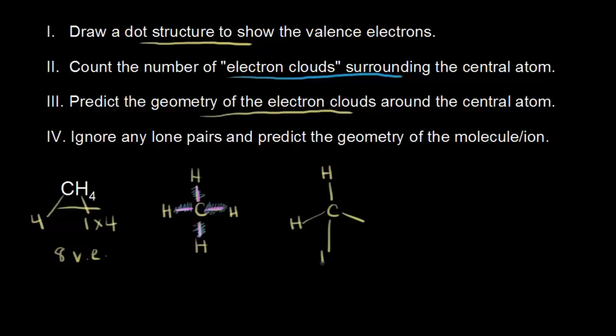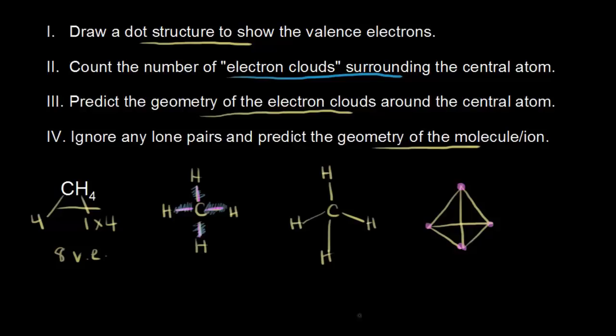I'm going to attempt to show it in a tetrahedral geometry, and then I'll show you what a tetrahedron looks like. Here's a quick sketch of the molecule, and here's a tetrahedron — a 4-sided figure. You can think about the corners of your tetrahedron as being approximately where your hydrogens are. That gives you a better visual picture of the tetrahedron shape. So we've predicted the geometry of the electron clouds. In step 4, we ignore any lone pairs around our central atom, which we have none this time. Therefore, the geometry of the molecule is the same as the geometry of our electron pairs.